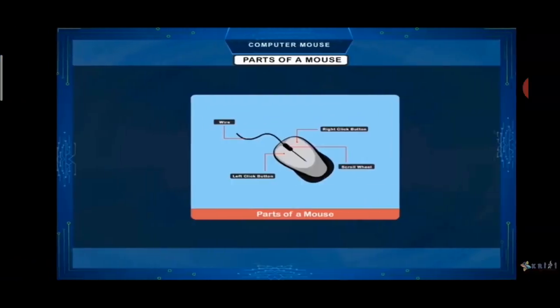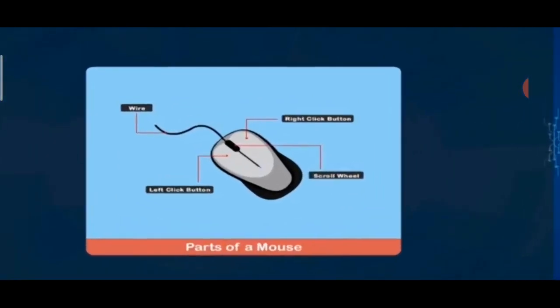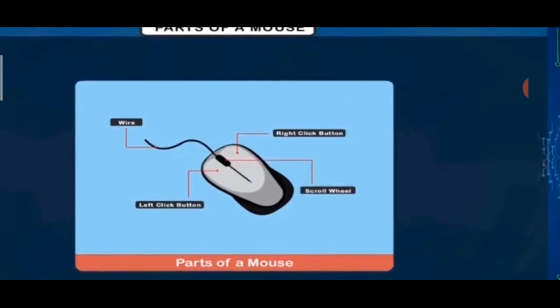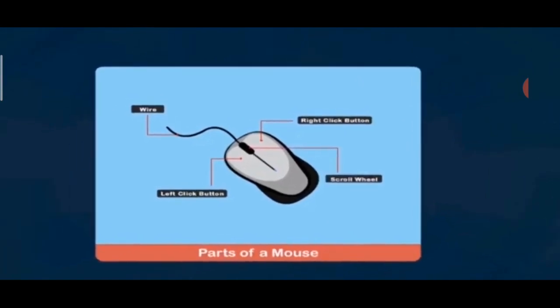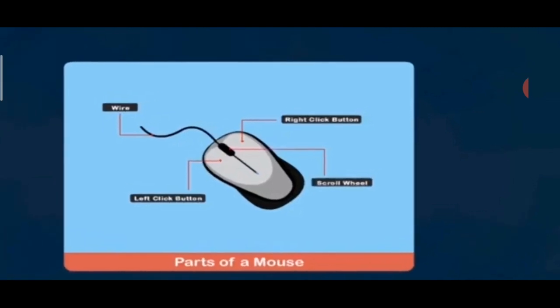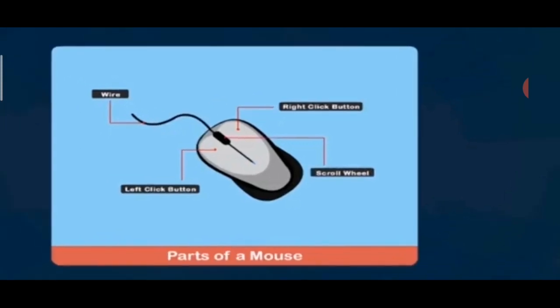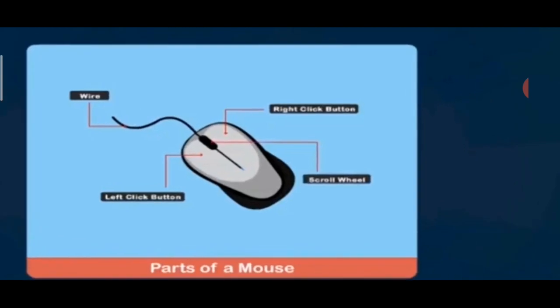Parts of a mouse. There are 4 parts of a mouse. First is the wire, which is attached to the CPU box so that we can use our mouse. It has 2 buttons on it — left mouse button and right mouse button. You can also say left click button and right click button.